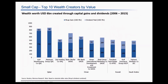Coming to the small cap wealth creators in terms of value, we have Medicare Group from Qatar leading the group, and just one company from Saudi Arabia making it to the list. This is a trend contrary to what we observed earlier, where majority of the wealth creators had been from Saudi Arabia and UAE. In the small cap segment, companies from KSA are largely absent and the space is dominated by other countries.